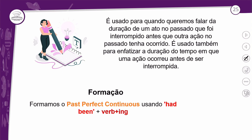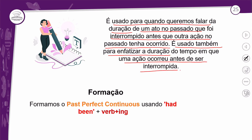Vamos relembrar o uso. Esse tempo verbal é usado para quando queremos falar da duração de um ato no passado, que foi interrompido antes que outra ação no passado tenha ocorrido. Então, ele fica na mesma ideia do passado perfeito — uma ação no passado que aconteceu antes de outra ação no passado, o passado do passado. E esse passado perfeito contínuo é usado também para enfatizar a duração do tempo em que uma ação ocorreu antes de ser interrompida.